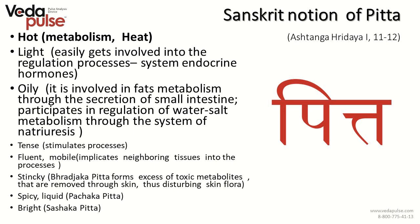The Chinese hieroglyph of Yang has two graphemes — the first is a hill and the other denotes the sun; together they mean the sunny side of the hill which is always getting warmed up. According to Ashtanga Hridaya, Pitta is something that is hot, light, and easily gets involved in regulation processes. It is oily, involved in fat metabolism through secretion of the small intestine, and participates in regulation of water-salt metabolism. Pitta is dense, stimulates processes, fluent and mobile. It is also stinky as Phranjaka Pitta forms excess of toxic metabolites removed through skin, disturbing skin flora. It is also spicy, liquid, and bright.